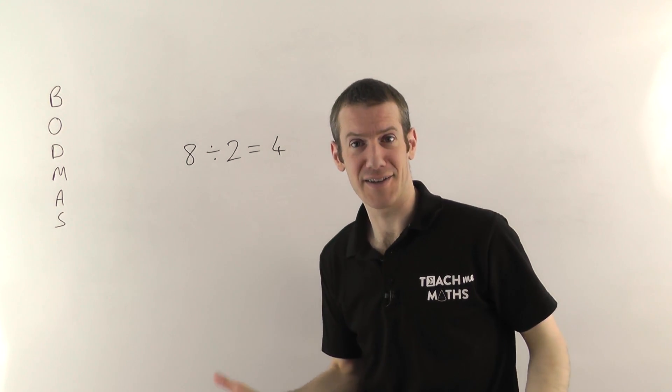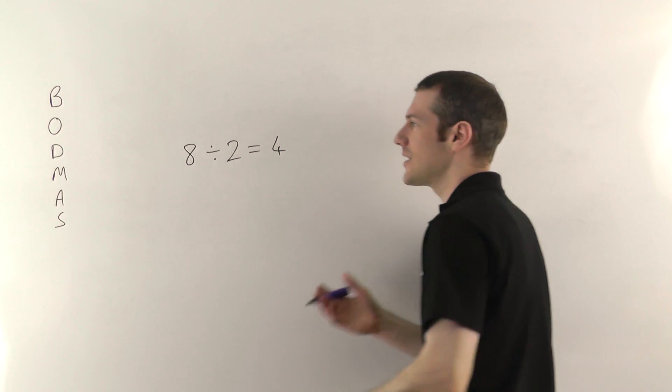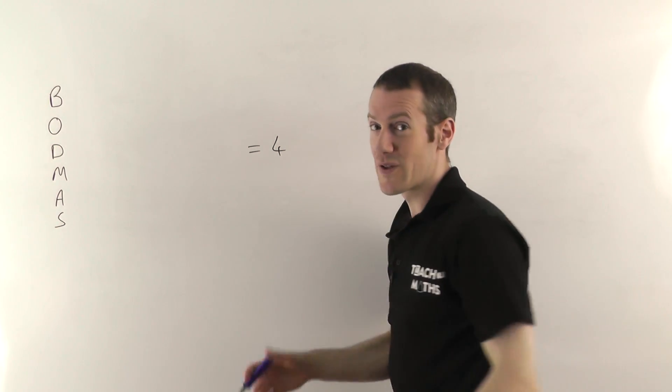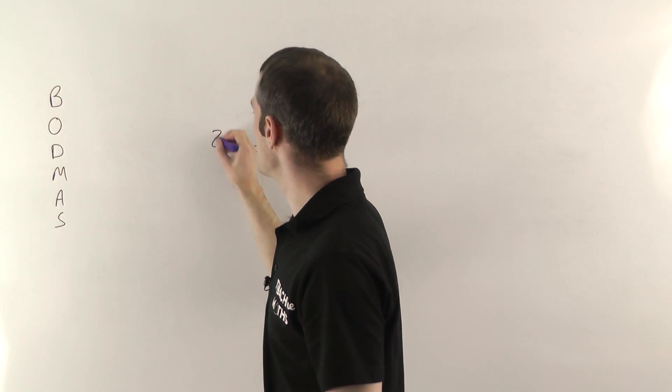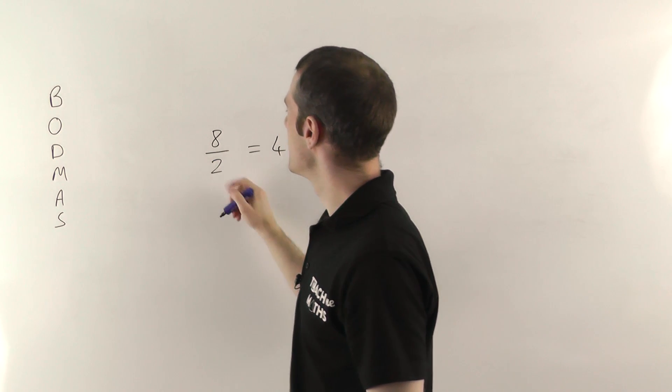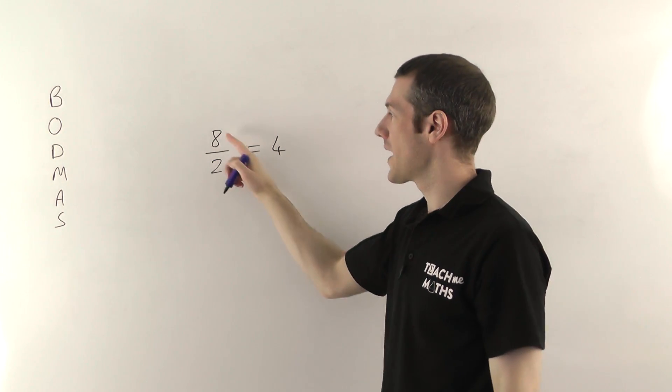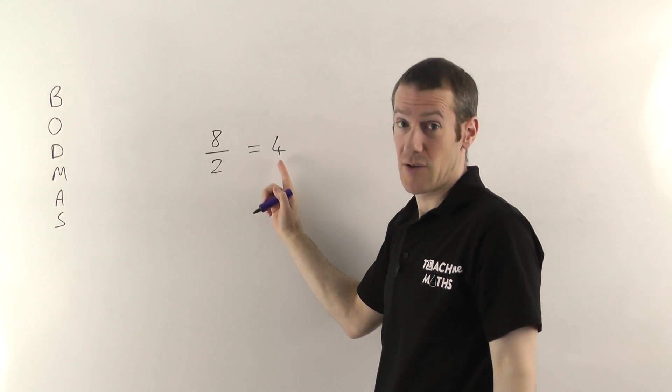So how do we divide things? Well you do it with fractions. So if you want to show 8 divided by 2 you have to write it like this. 8 divided by 2 equals 4.